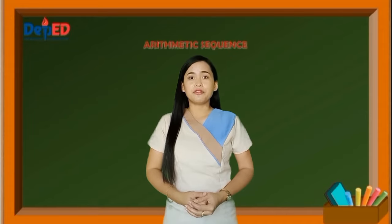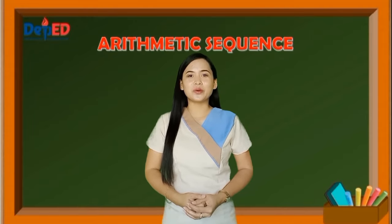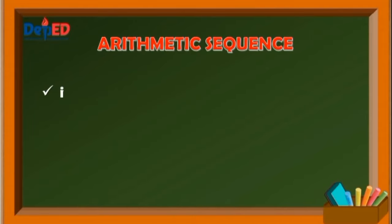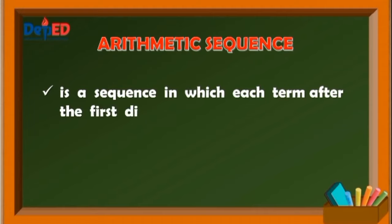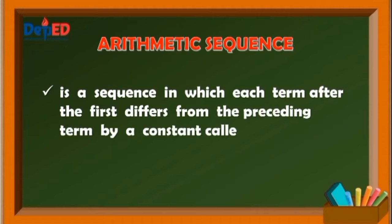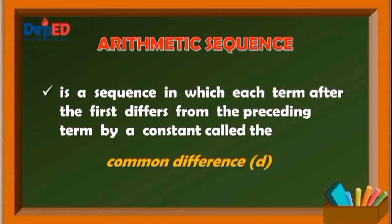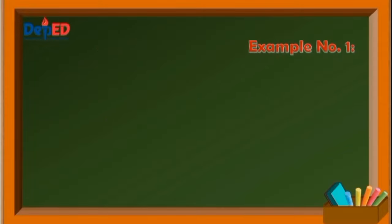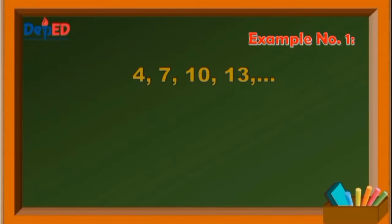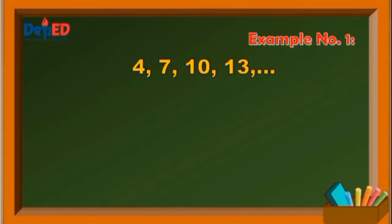One of these is arithmetic sequence. An arithmetic sequence is a sequence in which each term after the first differs from the preceding term by a constant called the common difference, represented by letter D. Going back to the sequence 4, 7, 10, 13, and so on, let us compute the common difference.